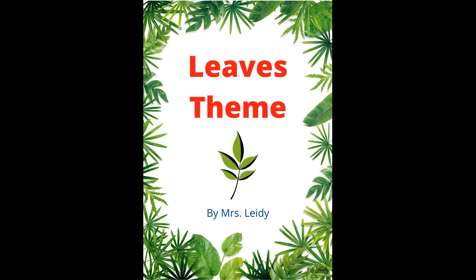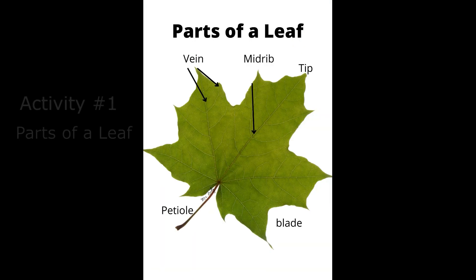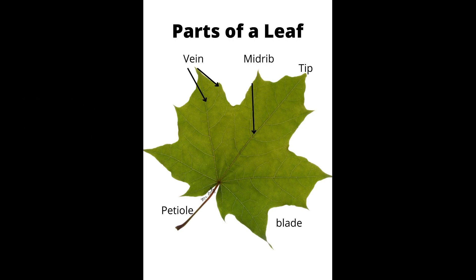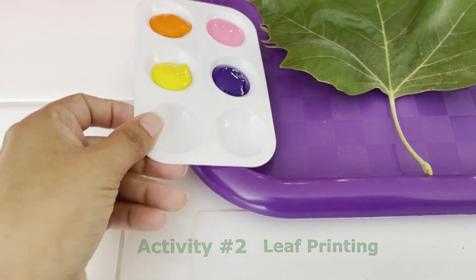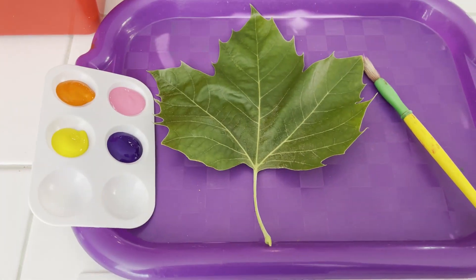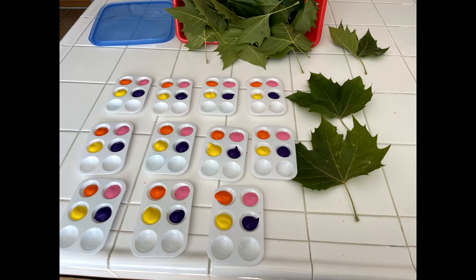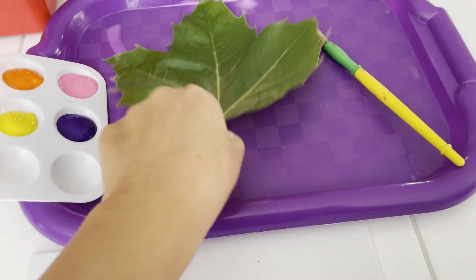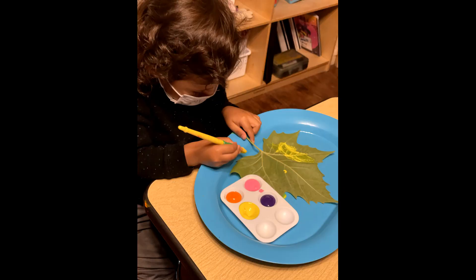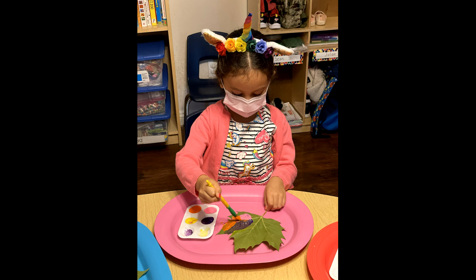We are in week 3 and we are learning about the parts of a leaf, so I wanted to use real leaves so children can use their 5 senses through these activities. For this activity we use paint, real leaves, white paper, a tray and a brush. This is a fun and great way to identify the parts of the leaf. Children are able to touch and recognize the different parts. There are many more activities coming up, so I recommend you to watch the entire video.